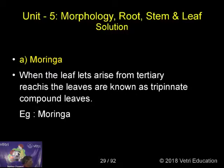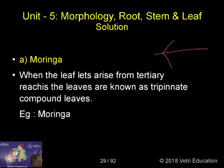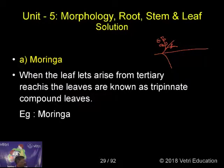So here you can find — this is the leaf, and this is the secondary rachis, this is the tertiary rachis, and leaves or leaflets are found on the tertiary rachis in Moringa. So Moringa has tripinnate compound leaves.